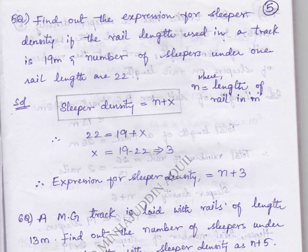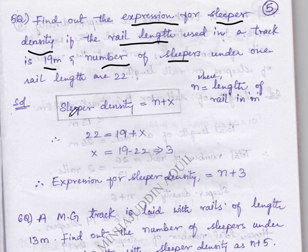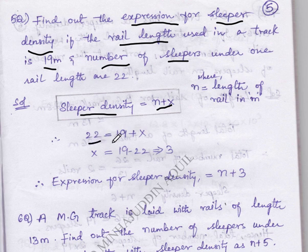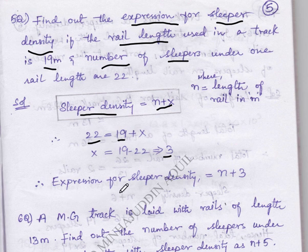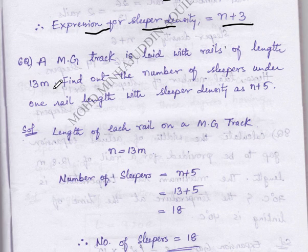In this problem we have to calculate the expression for sleeper density if rail length is given and number of sleepers is given. Sleeper density equals n plus x. Sleeper density is given as 22 and n is given as 19, so x we have to calculate. By subtracting we get 3, therefore the expression for sleeper density is n plus 3.